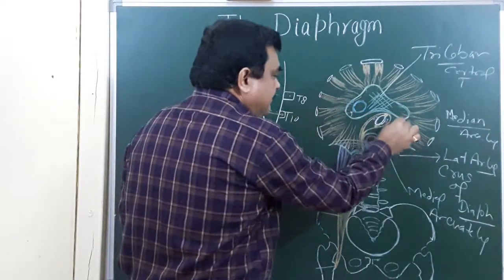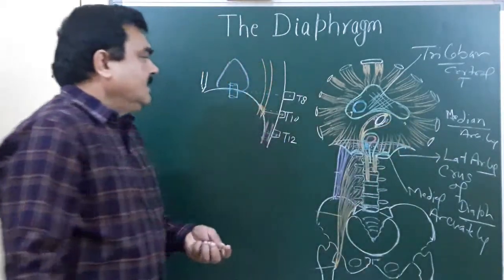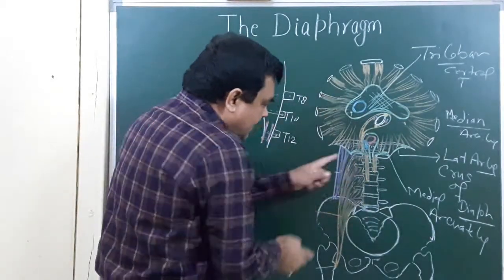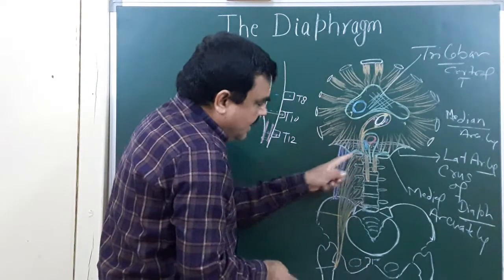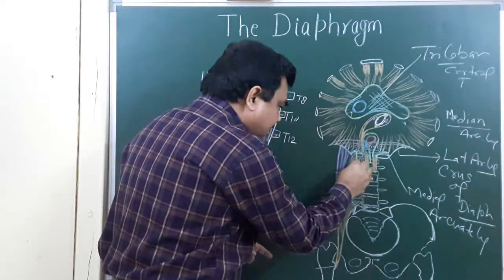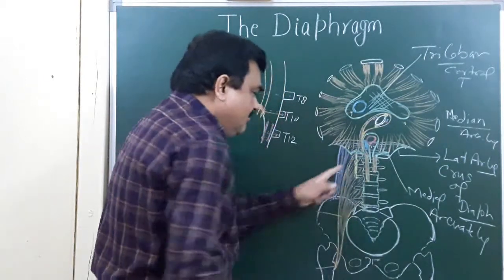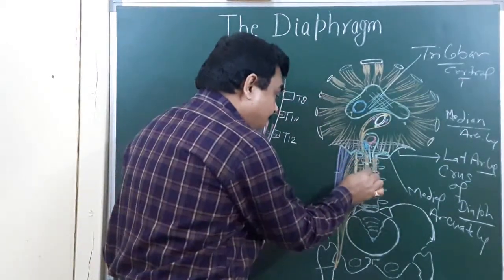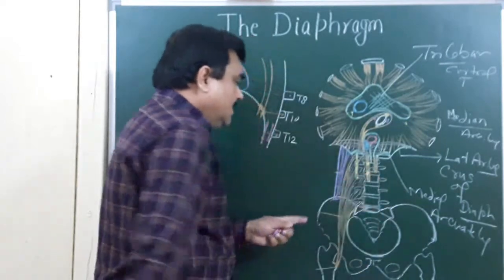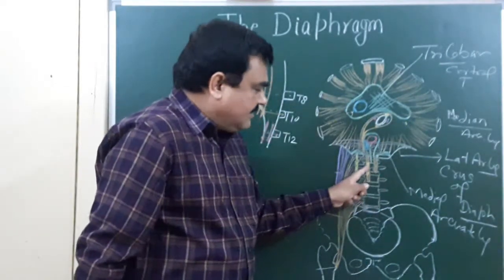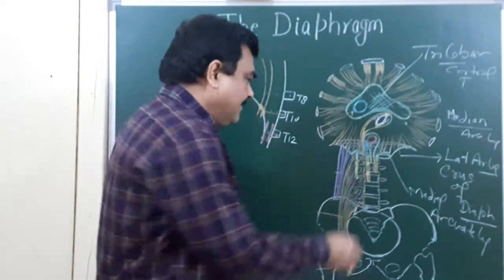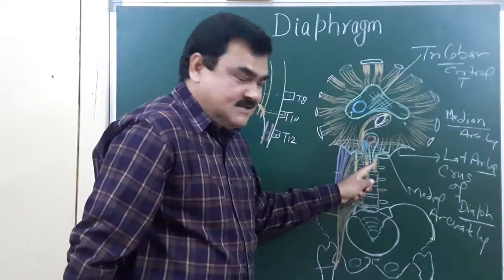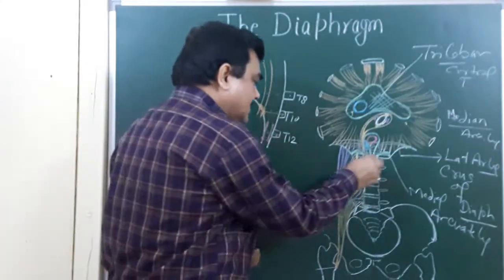Through the inferior vena cava opening, the right phrenic nerve pierces this, and the left phrenic nerve also pierces this. For the smaller openings, deep to the medial arcuate ligament, the greater and lesser splanchnic nerves pass by piercing the crus of the diaphragm — both right and left. Sometimes, the hemiazygous vein also pierces this.